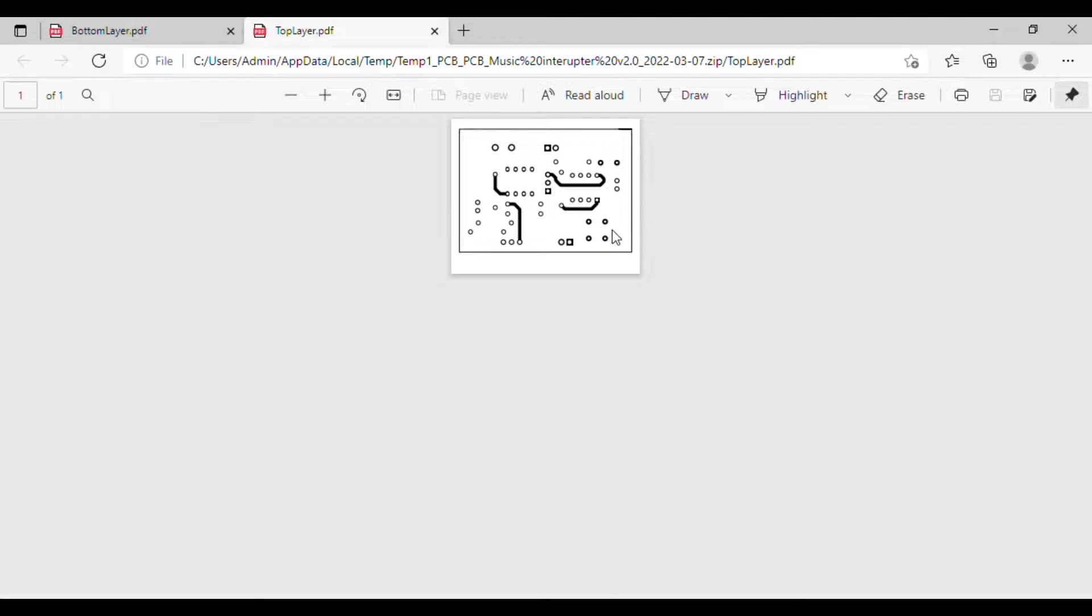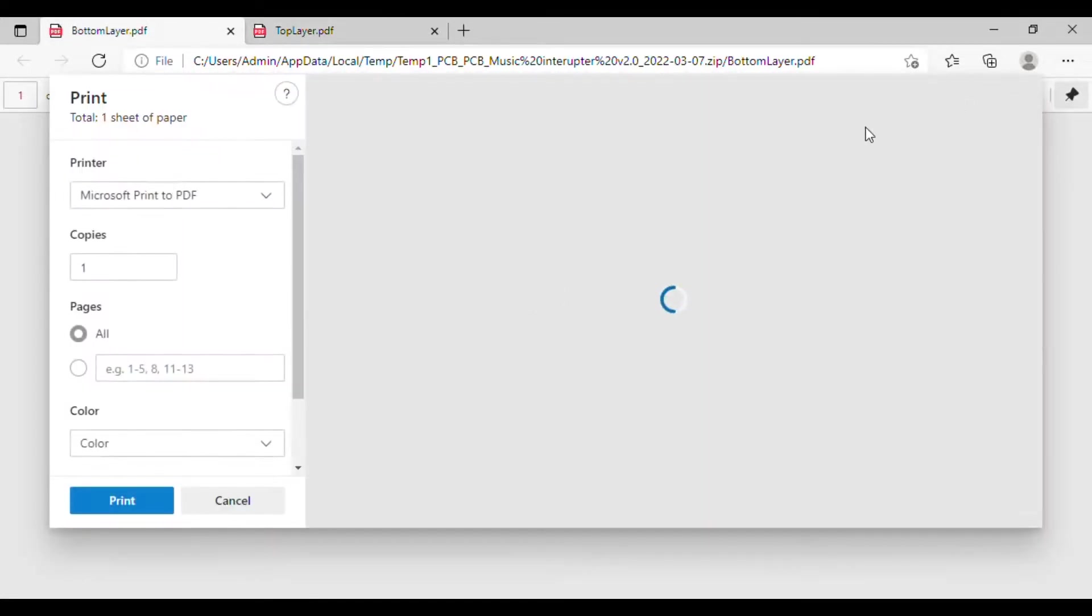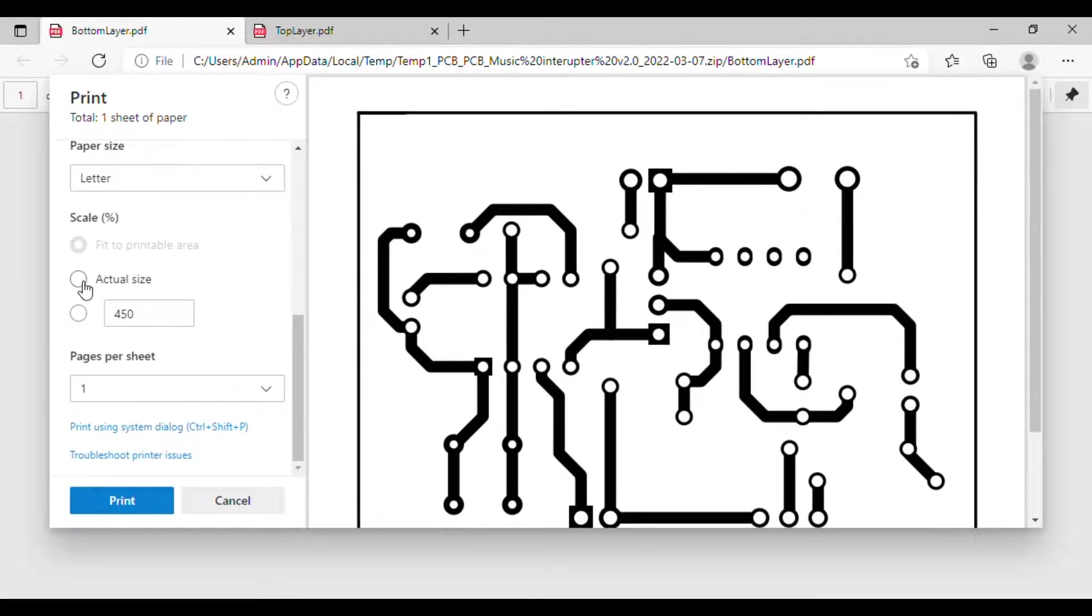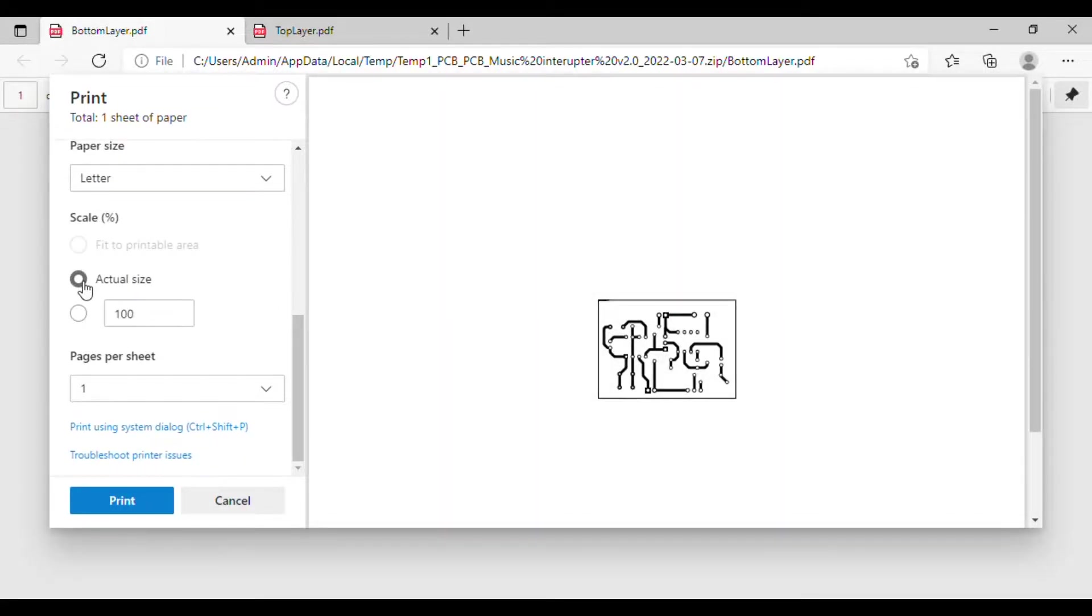When you have exported the file, you want to open them up in PDF format, both the top and bottom layer here, and print them both out. When you're printing, be sure to go down to more settings and select actual size. Otherwise, your size is going to be too big for the board or too small. So don't forget to select actual size before printing, and then just print them all out, both the top and bottom layer.